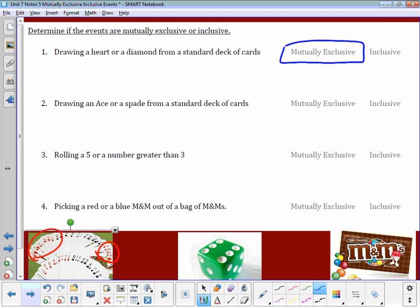Number 2: drawing an ace or a spade from a standard deck of cards. Well, there's an ace in all four suits: in hearts, in clubs, in diamonds, and in spades. Since there is an ace in the spades, that means there's going to be things that overlap. We've got an ace that's in the spade category as well, so I have to take out the inclusive part. These are inclusive events that cross over each other or overlap.